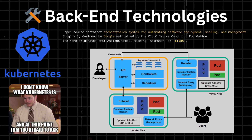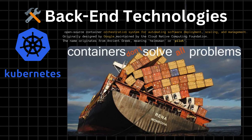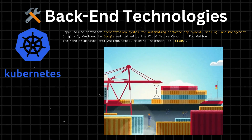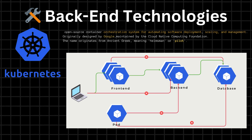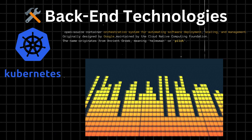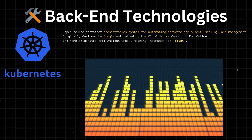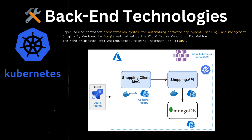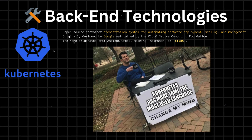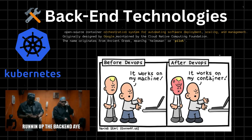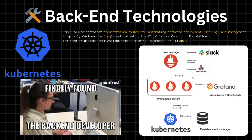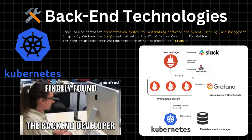Kubernetes. Spotify harnesses the power of Kubernetes to support its containerized applications and services. Kubernetes provides a unified platform for managing and orchestrating containerized applications, making it easier for Spotify to manage its back-end infrastructure. With Kubernetes, Spotify can deploy, scale, and manage its containerized applications consistently and reliably, regardless of the underlying infrastructure. Kubernetes also provides powerful features for managing microservices such as service discovery, load balancing, and automatic scaling. Furthermore, Kubernetes provides a flexible and extensible platform, allowing Spotify to integrate with tools like Prometheus for monitoring and Grafana for visualization.